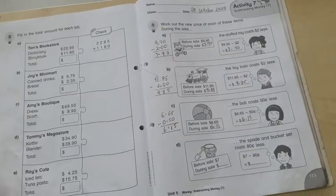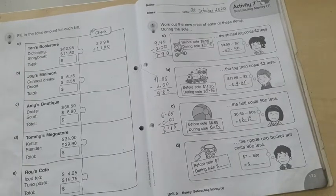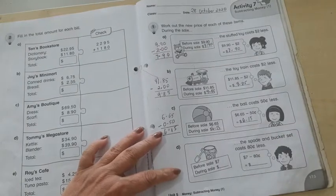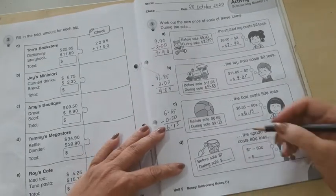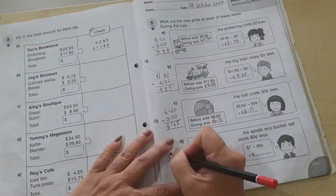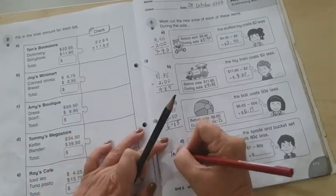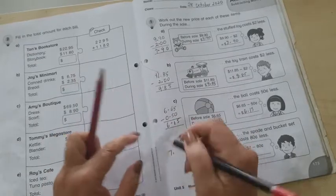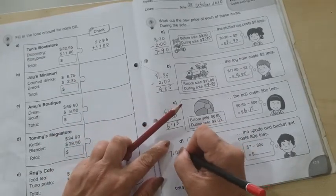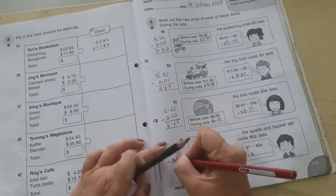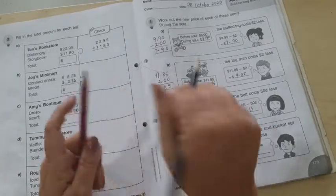And now, the last sum. So, it says here, before sale $7.00, $0.80 is the discount in the sale. So, $7.00 minus $0.80.